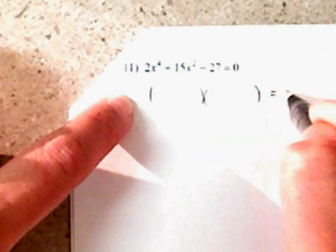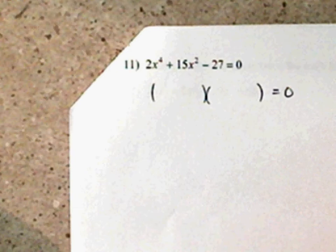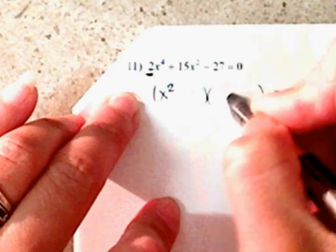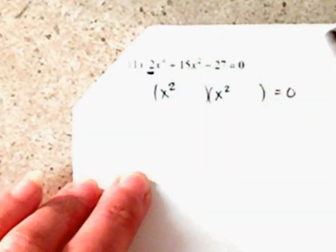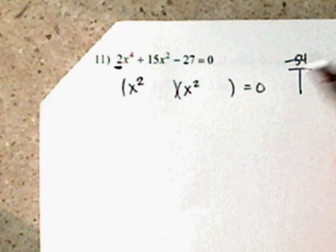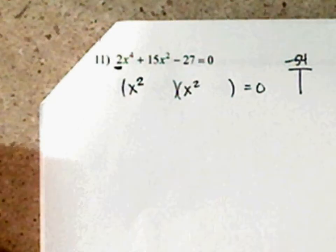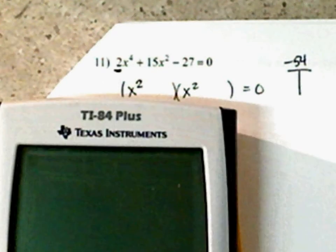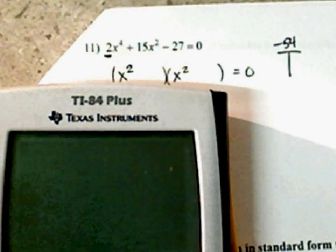On page 3, number 11 and 12, we are going to continue to factor and solve. Take a look at your terms: 1, 2, 3. Any greatest common factor that you can factor out — since you can't, but it has three terms, I'm going to factor like a trinomial. Don't forget your a is a 2. Factors of x to the fourth: x squared times x squared. 2 times negative 27 is negative 54. What two numbers multiply to give you negative 54 and subtract to give you 15? Now if you don't know, there is a little trick you can use on your calculator, but it's really important to please learn your multiplication facts.